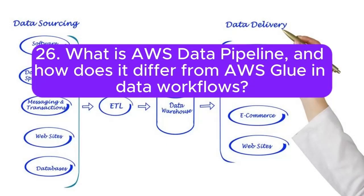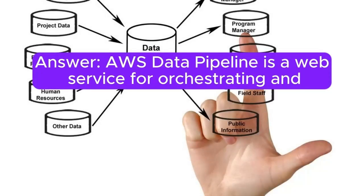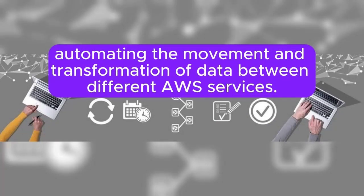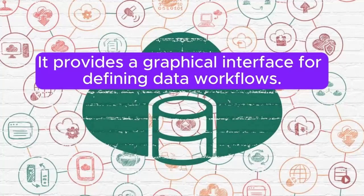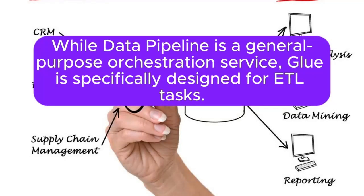26. What is AWS Data Pipeline, and how does it differ from AWS Glue in data workflows? Answer: AWS Data Pipeline is a web service for orchestrating and automating the movement and transformation of data between different AWS services. It provides a graphical interface for defining data workflows. AWS Glue, on the other hand, is a fully managed ETL service that focuses on data discovery, cataloging, and transformation. While Data Pipeline is a general-purpose orchestration service, Glue is specifically designed for ETL tasks.